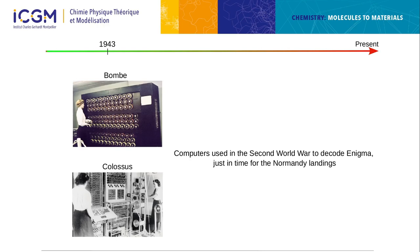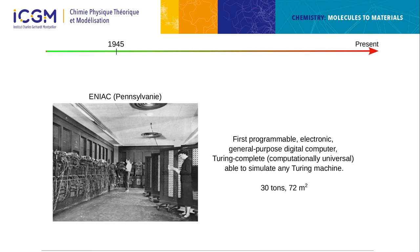The Germans thought the landing would be in North Pas-de-Calais, so the Allies managed to decode German information and lure them so they could land in Normandy safely. In 1945, at the end of the war, one of the first really big classical computers was developed — ENIAC in Pennsylvania — the first Turing-complete computer, meaning it can simulate any classical algorithm.